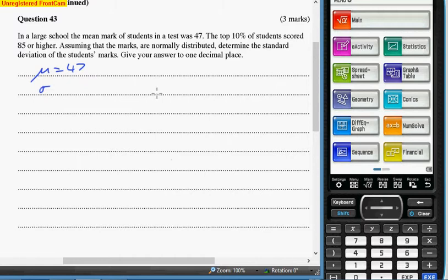It's a normal distribution. Pictures. I love pictures. Here we go. Let's draw what we've got here. We've got the mean is 47. So there's my mean.